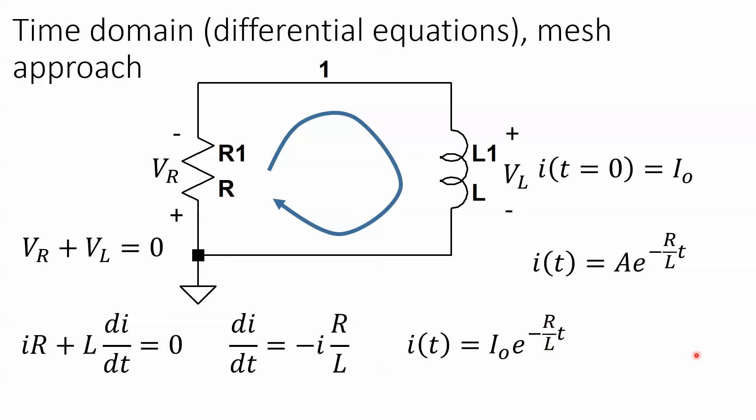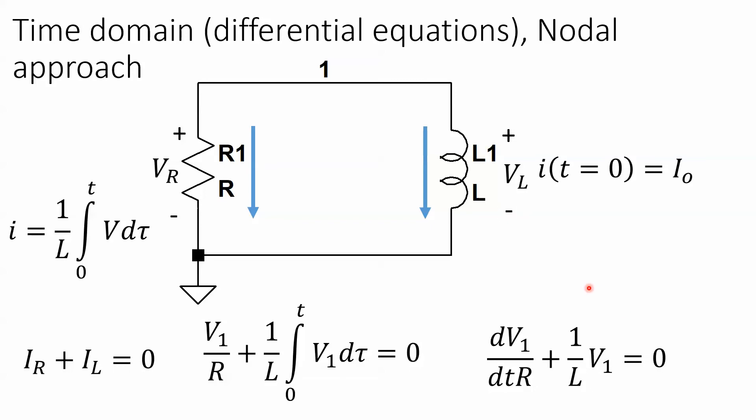All right, now the time domain differential equations nodal is a little more involved. So I set up my nodal currents, and in this case I have them both leaving, so I have plus minus, plus minus. And now I have node voltage one which is measured from here to ground.